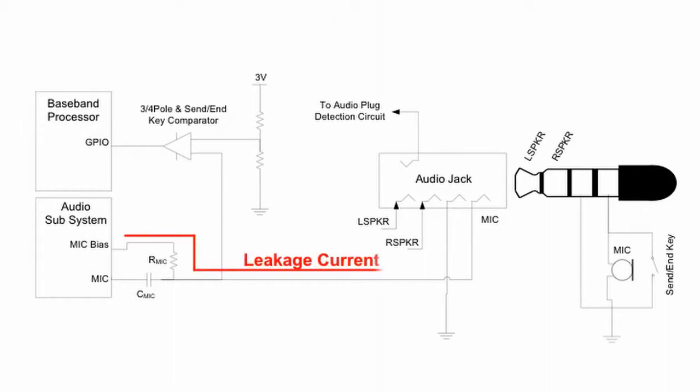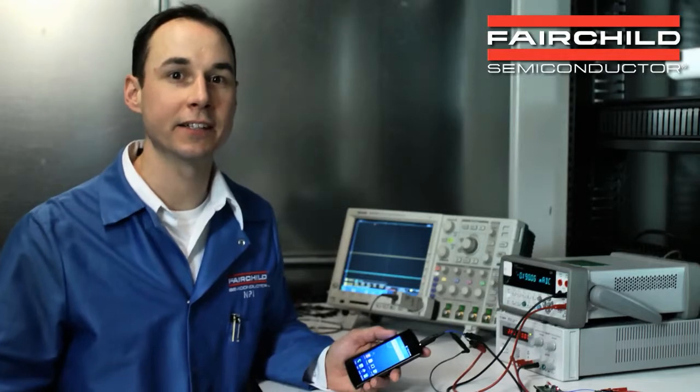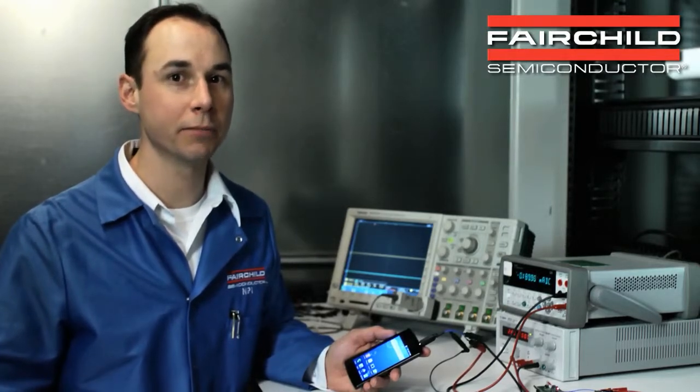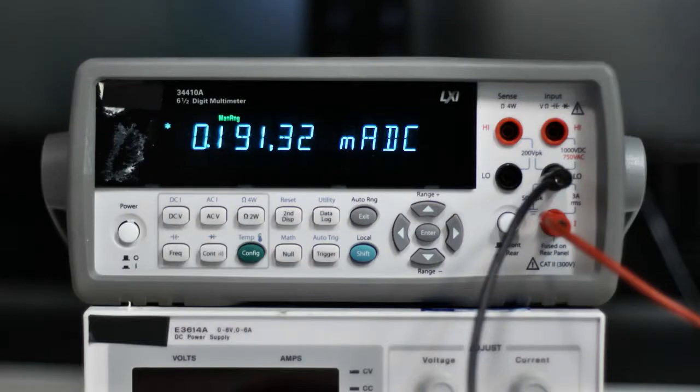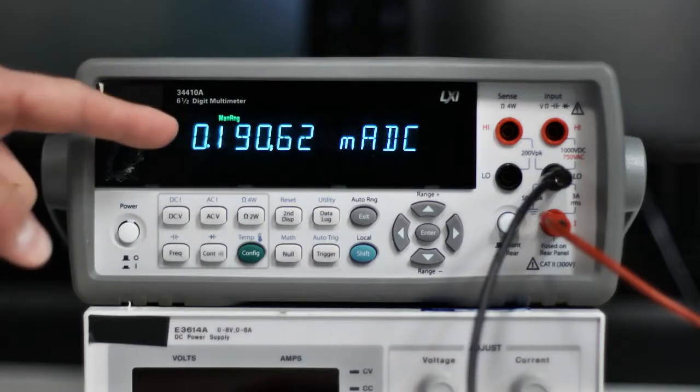Since the headset microphone is not needed, there is excess current from the mic bias voltage through the pull-up resistor and microphone to ground. Here I've attached an amp meter to a phone. It's measuring the DC current leakage from the mic bias. As you can see, the current is greater than 188 microamps.